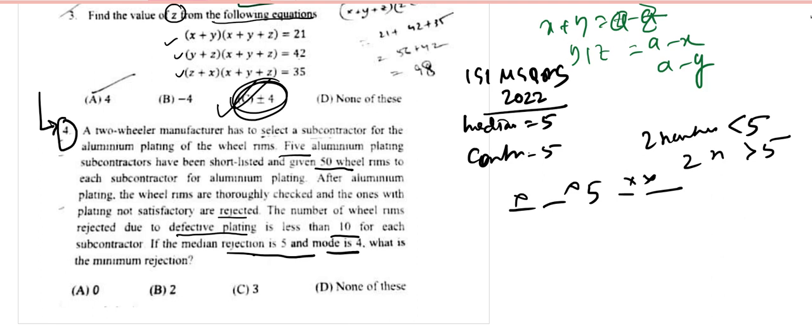Now mode is 4, so there has to be two fours. So let it be 4, 4, 5, and two more values. The minimum rejection criteria will be this. We take a look into the options - 4 is not there, so none of these is the answer.